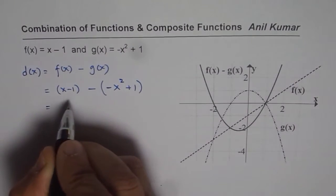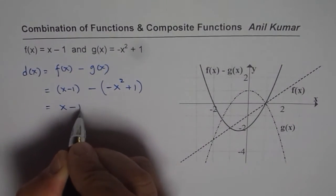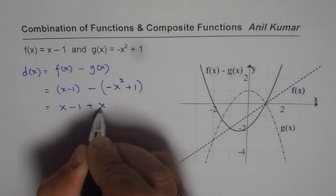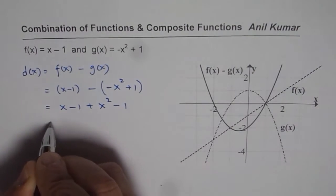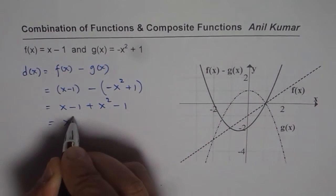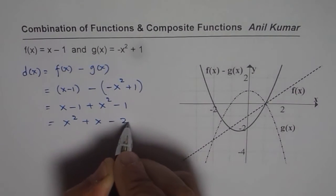Now we can open these brackets and simplify. We get x minus 1, minus minus becomes plus minus 1. Let us rearrange then. We get x square plus x minus 2.